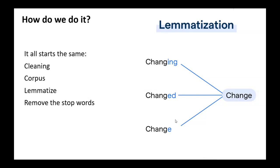Once cleaned, you need to build a corpus — the set of words you're going to learn from. Many programs have built-in corpora you can use. Next, you lemmatize your words — change them into their stems — which prevents flooding your model with words that are actually the same word used slightly differently. Then we remove our stop words — 'if,' 'and,' 'of,' 'the,' 'but' — boiling our words down to the most basic meaningful parts before we build the model.